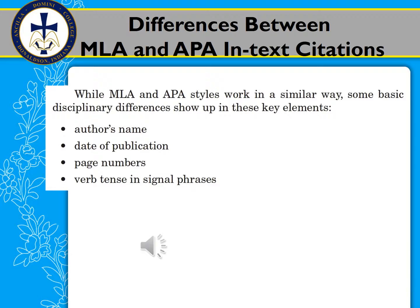Let's talk about the differences between MLA and APA in-text citations. They're somewhat similar, but there are a couple of differences. Those differences show up in how we handle the author's name and including the date of publication — APA includes that, MLA won't. The way you do page numbers is slightly different. The verb tense and signal phrases are also somewhat different. I'm not going to focus on that quite as much in this course, but I'm putting that out there so you're aware of it.